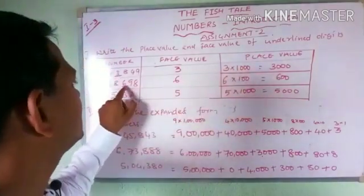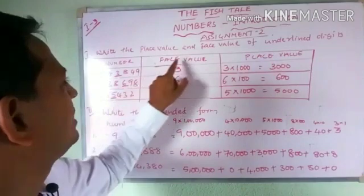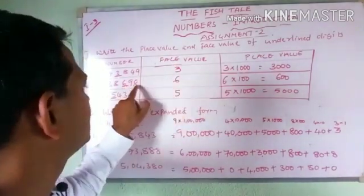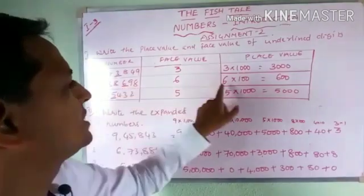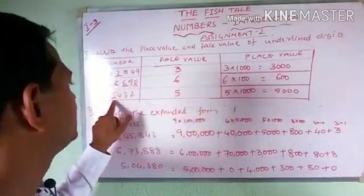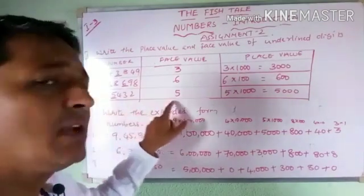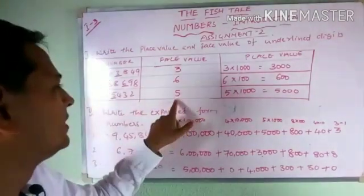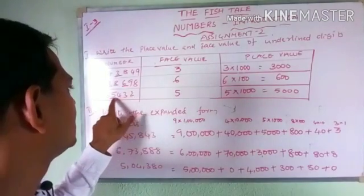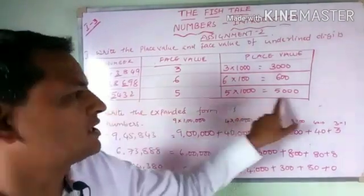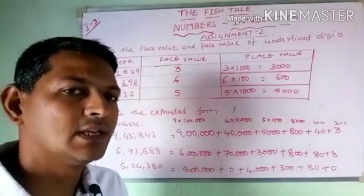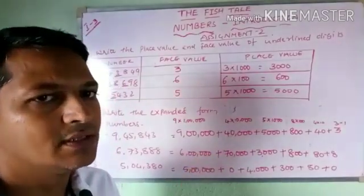Now for digit 6: the face value of 6 is 6 itself, and 6 is in the 1s, 10s, 100s place, so 6 into 100 is 600. For the underlined digit 5: the face value is 5 itself, and 5 is in the 1s, 10s, 100s, and 1000s place, so 5 into 1000 is 5000. These are the place values and face values of the underlined digits.